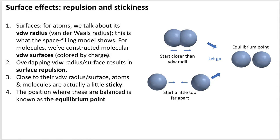The key idea is that if you try to bring two molecules or atoms together closer than the van der Waals radius — if their surfaces start to overlap — that's a surface repulsion. If you start two atoms closer than their van der Waals radius and let go, they'll spread apart. Conversely, if you start a little too far apart, they'll experience attractive forces and draw together, arriving at an equilibrium point where surface repulsion and stickiness are in balance.